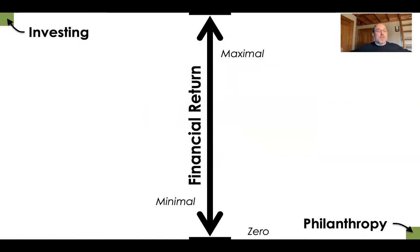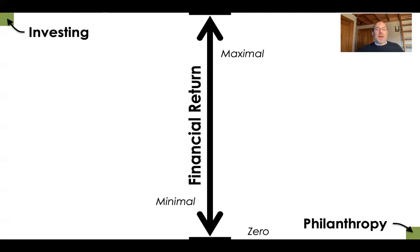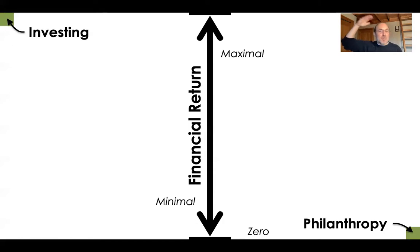Here's how you read this landscape. It's got two axes. One axis is running top to bottom, and in that axis we're just going to talk about financial return. If you're trained in investing, if you have some money and you put it in the stock market, or you're trained by your parents to take your savings and put it in a savings account — that's a form of investing too. So at the top, we have maximal return.